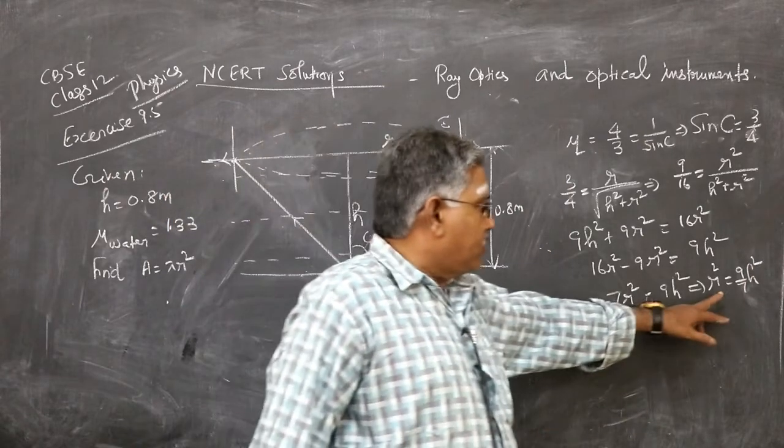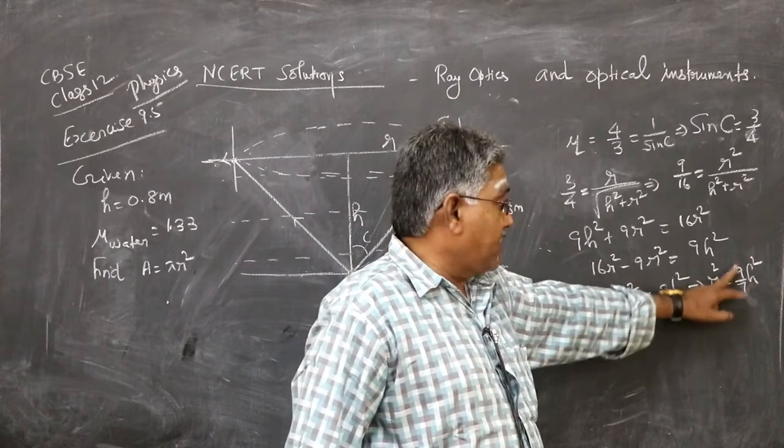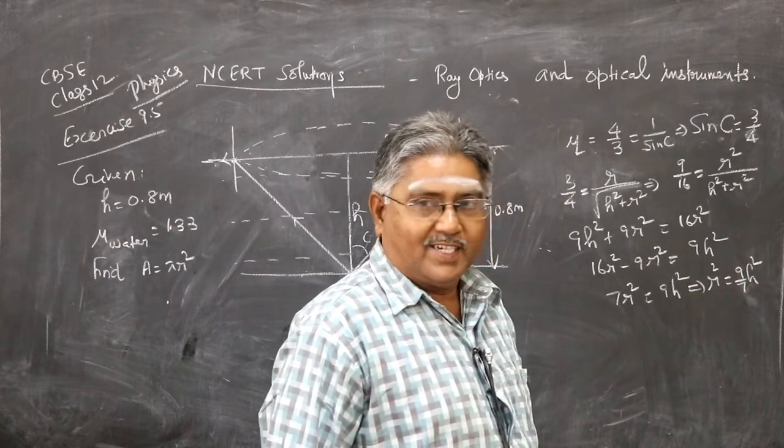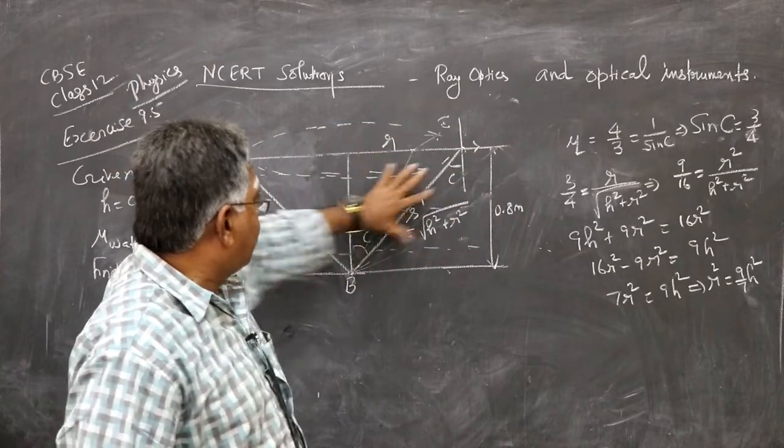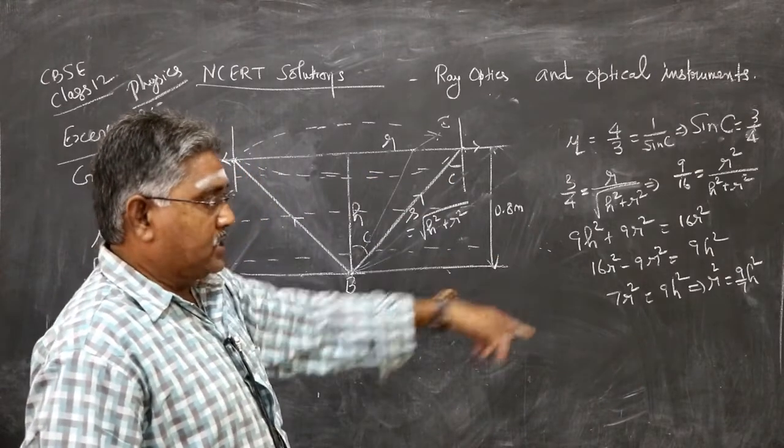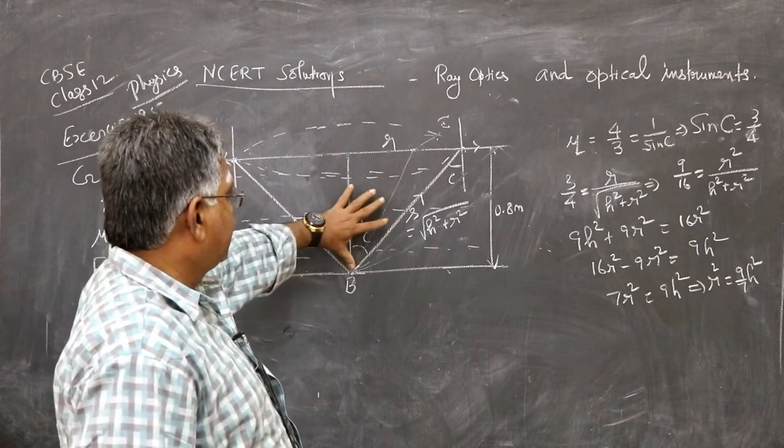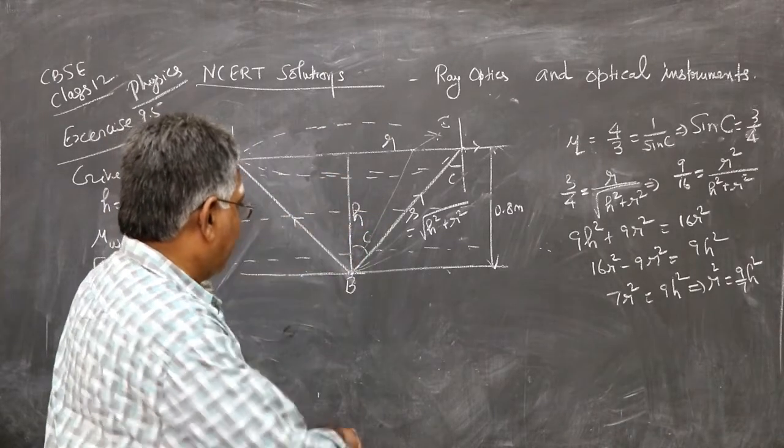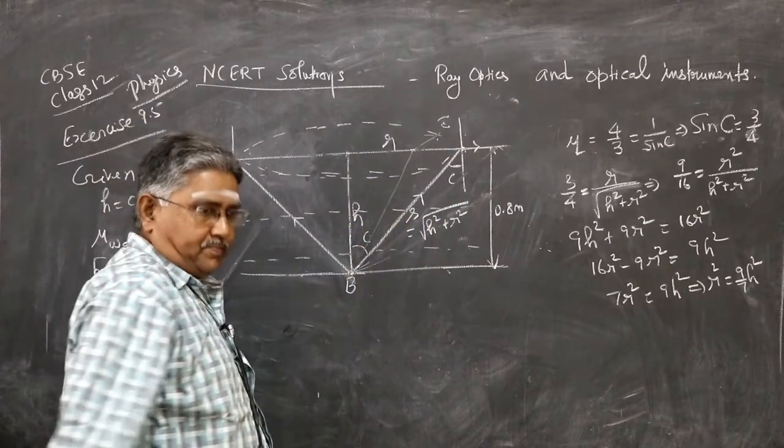Here itself, you will know that R is greater than H because this is 9 by 7. These are all little points. R is greater than H means when you draw the diagram, you should draw this to be greater than this. If you want perfection, R squared is 9 by 7H squared, so you get R greater than H. This is H from here to here. So draw R more than H in the diagram.